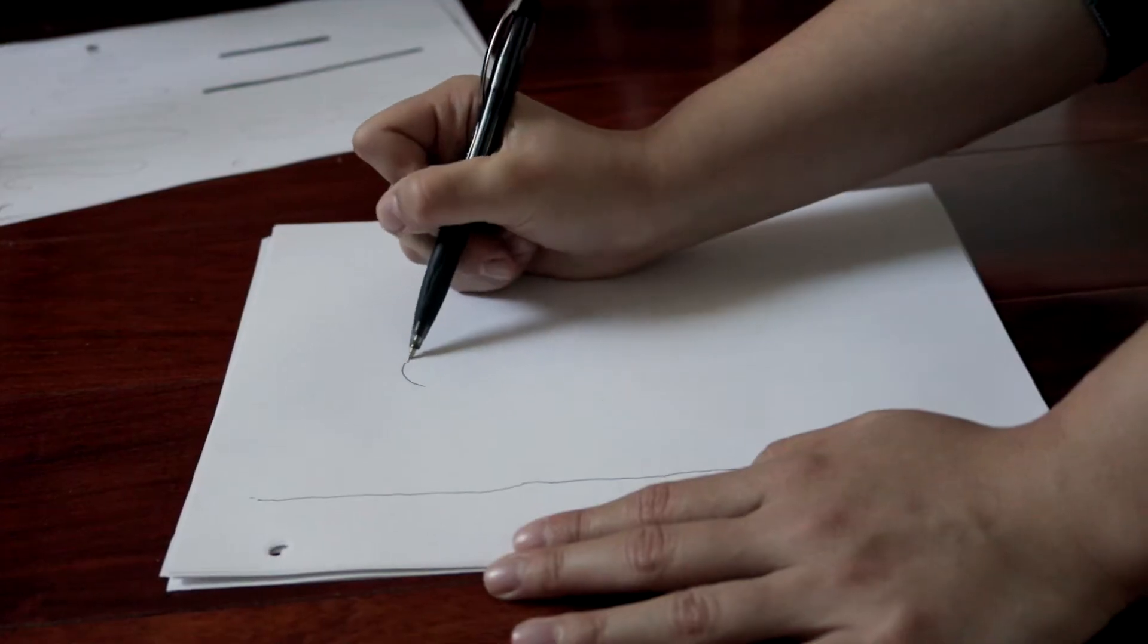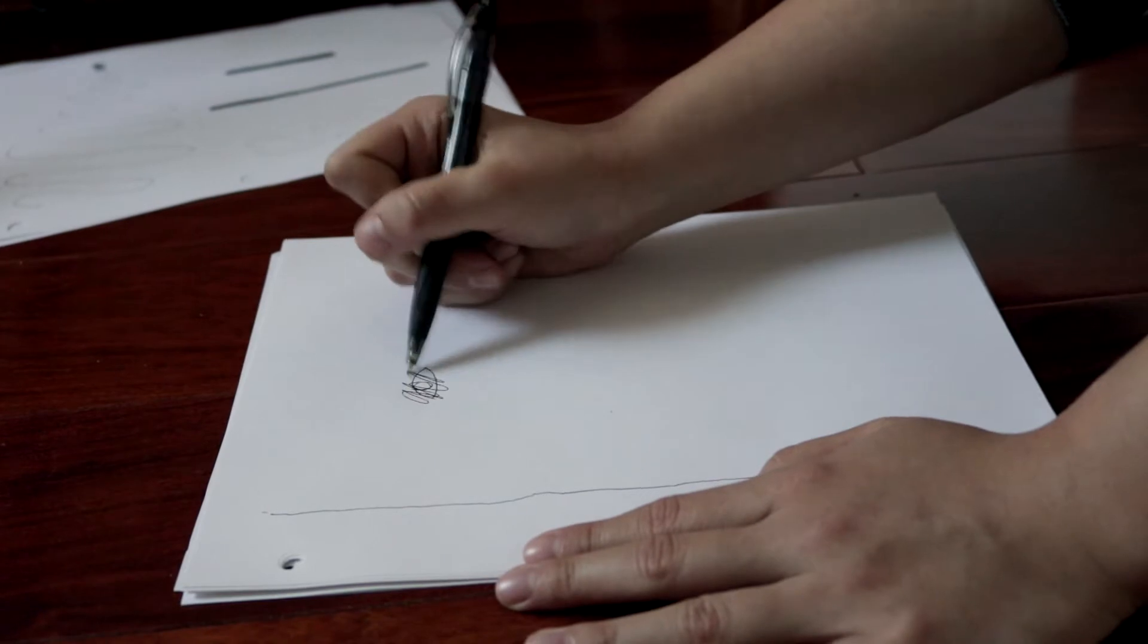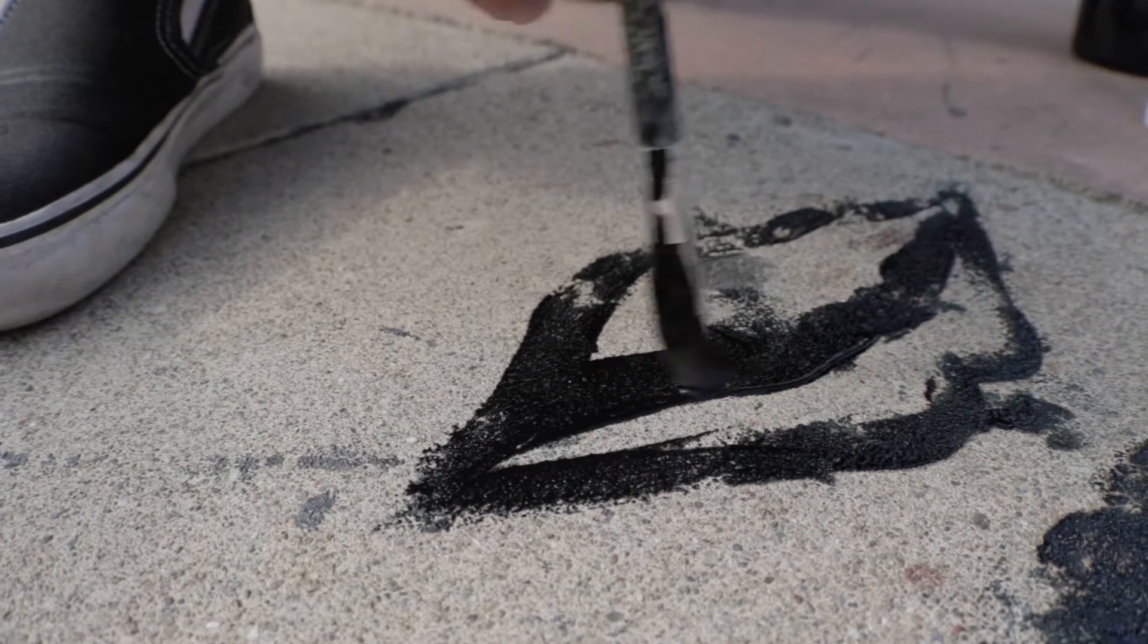Pen doesn't need to be confident. It can be shaky, it can make mistakes, and those mistakes get scratched out. It's jagged, it's ugly, and it can't be erased. And that's okay.